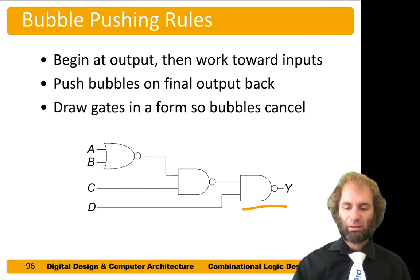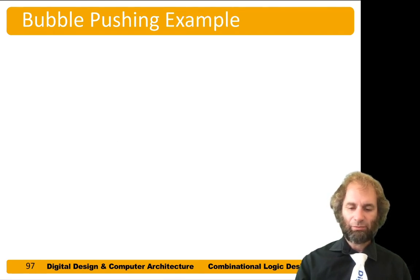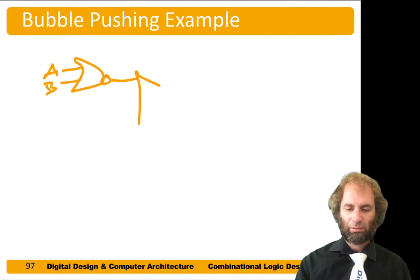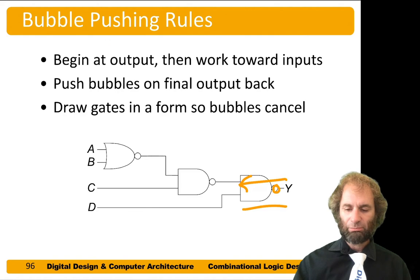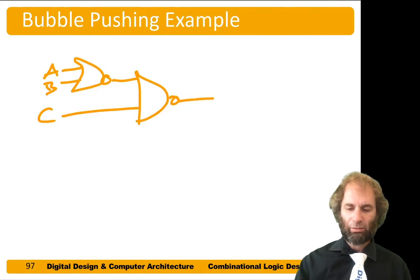So let's do that. This NAND has a bubble on the output, so let's try to push it back through. Here was our A NOR B NAND C. And now if I push the bubble through this NAND, I'm left with a NOR with an OR with inverted inputs.